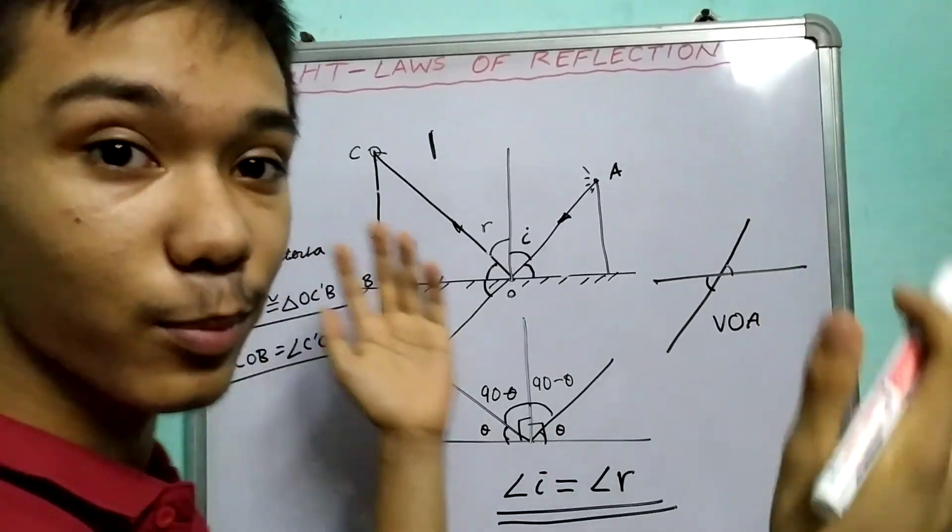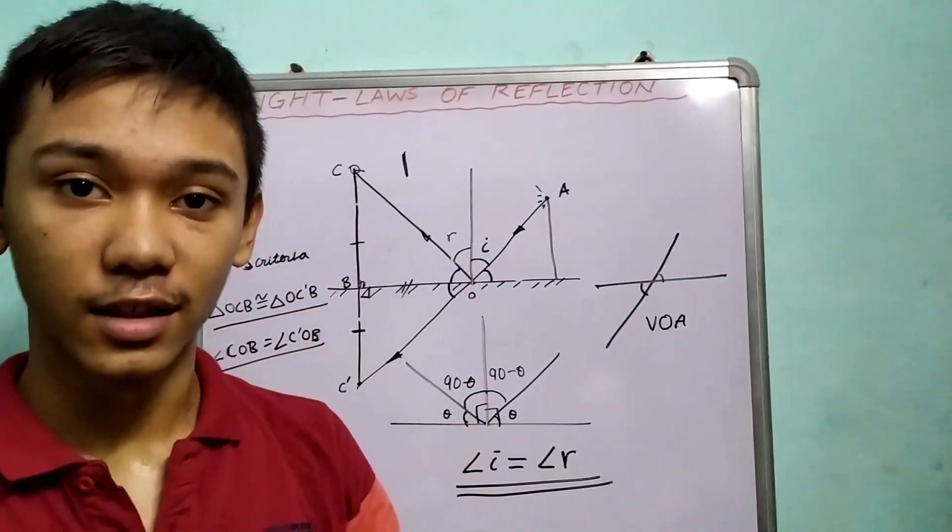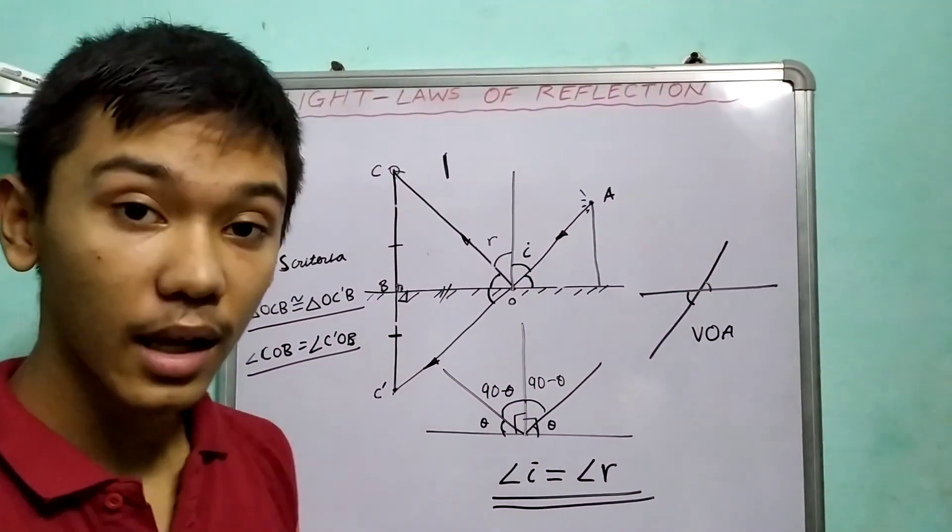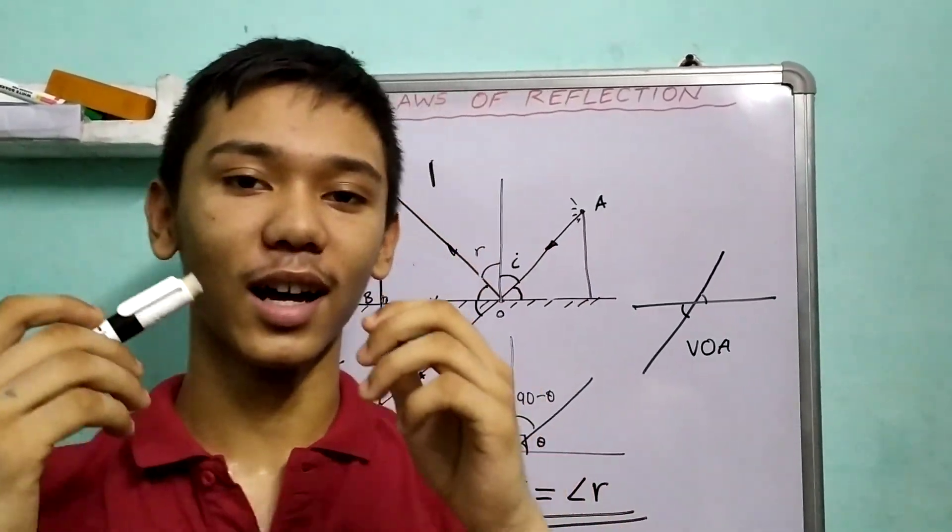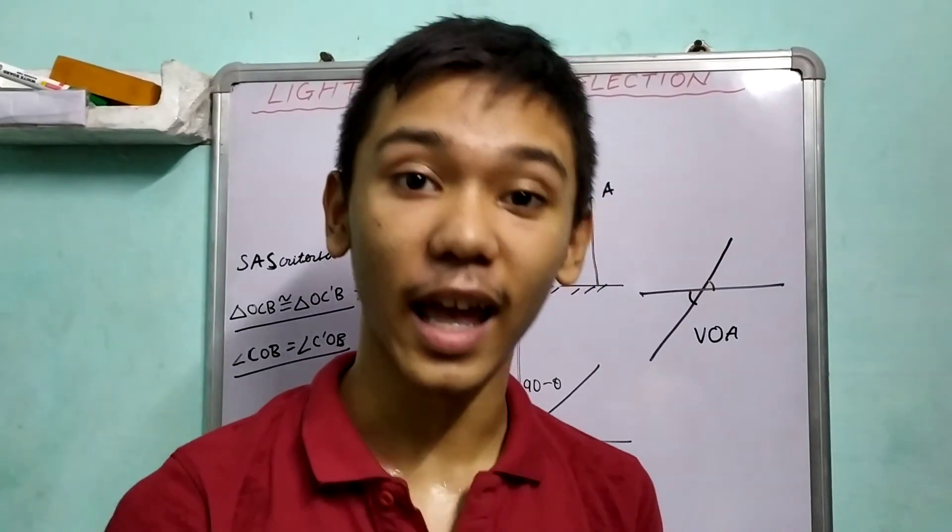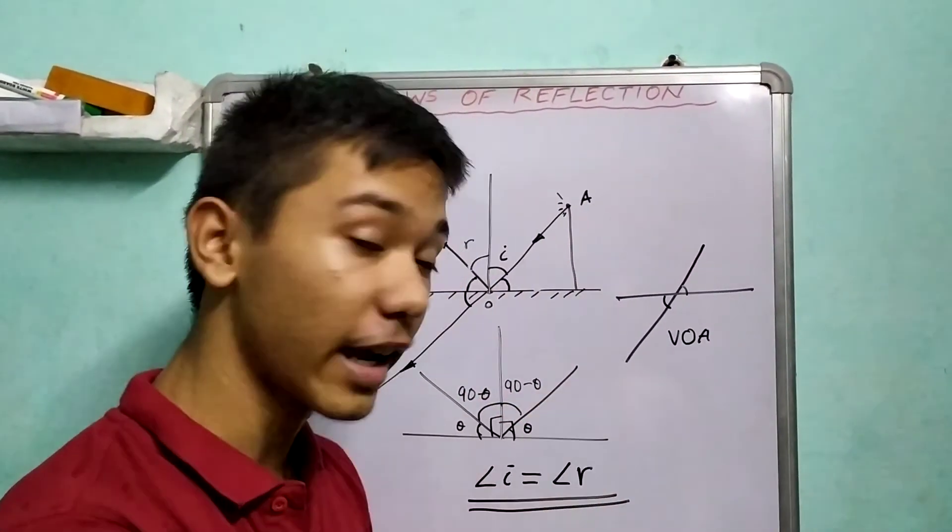Now, that's all. We have done proving the laws of reflection as a result of Fermat's principle of least time. Now, I hope it really helps. And now, you understand why these laws are true.